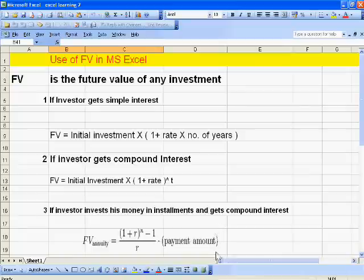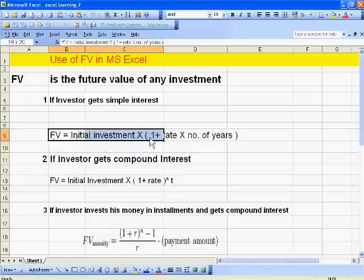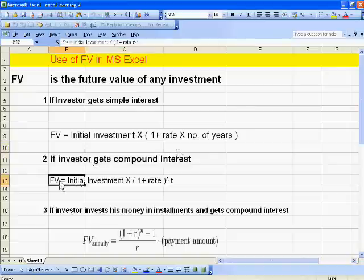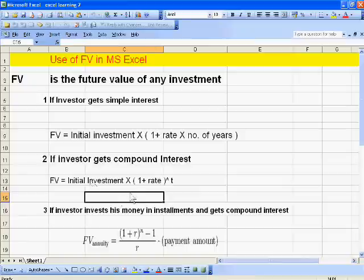There are three main types. If investor gets simple interest, then FV equals initial investment times 1 plus rate times number of years. If investor gets compound interest, it means FV equals initial investment times 1 plus rate to the power of number of years.